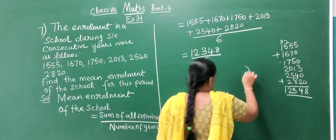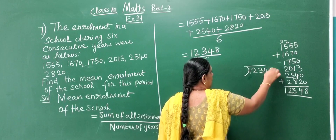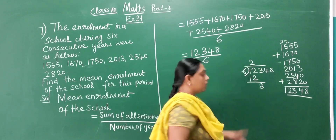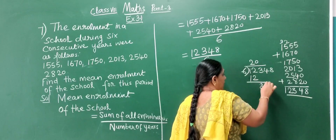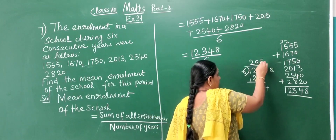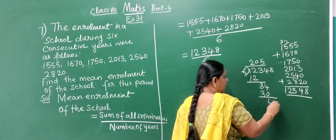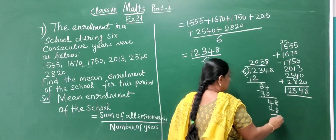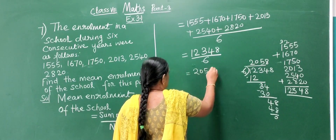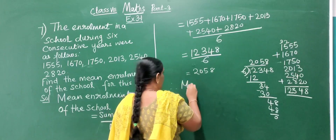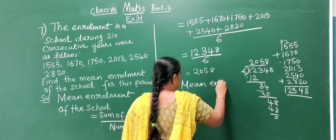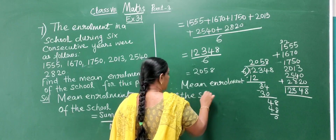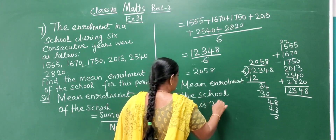Dividing 12,348 by 6 gives us 2,058. Therefore the mean enrollment of the school is 2,058.